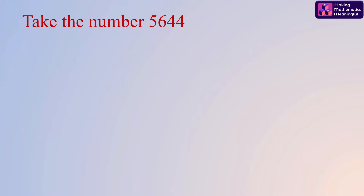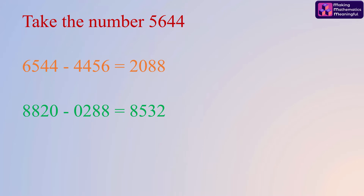Let me choose another example. Say the chosen number is 5644 — so two digits are repeated here. Form the largest and the smallest number, get their difference, and with the newly formed number repeat the same procedure. We again reach the number 6174 in just three steps.